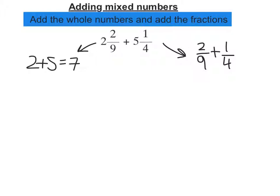So to get 36 in my denominator, I need to times this fraction, top and bottom, by 4, and this fraction by 9. Let's do that multiplication.